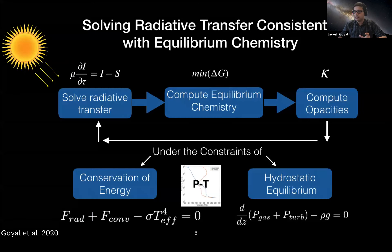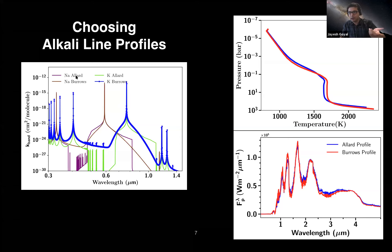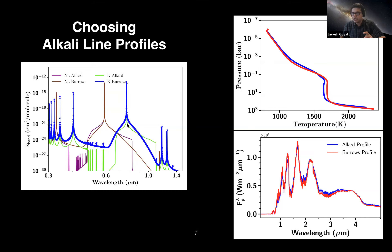While developing these models, we have to make many model choices. For example, when computing sodium and potassium opacities, there are different line broadening prescriptions — two standard ones called Allard and Burrows developed by different groups. We tested different profiles and found they don't have any significant effect detectable by current or near-future instruments. The effect on the pressure-temperature structure and emission spectrum with different profiles is negligible. We chose the Allard profile, which has more rigorous quantum mechanical calculations.